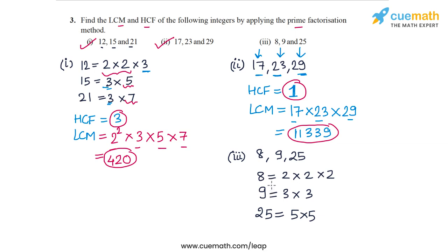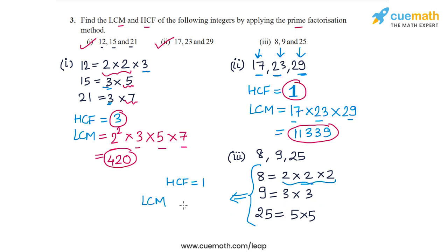For the HCF, these three numbers have no prime factor in common, so their HCF will be equal to 1. For the LCM, 2 occurs thrice in the first number and does not occur in the other two, so in the LCM it will occur thrice. 3 occurs twice in the second number but does not occur in the other two, so 3 will occur twice in the LCM. Similarly, 5 occurs twice in the third number but does not occur in the other two, so in the LCM it will also occur twice.